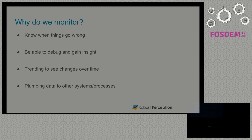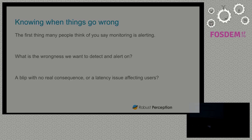I see monitoring as basically three things and one extra. One of them is knowing what goes wrong, being able to debug that thing that is wrong, looking at trending over time, and — when all you've got is a monitoring system, everything looks like a monitoring problem. If you talk to people and say 'what's monitoring,' a lot of them will say just alerting. Alerting is important, but the question we need to ask is: we want to detect what's wrong — but what sort of wrongness, and what level of wrongness?